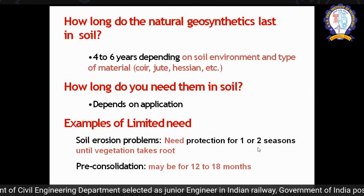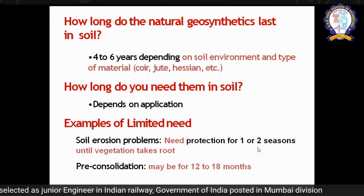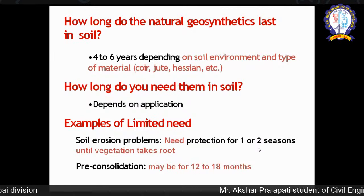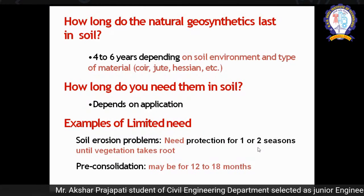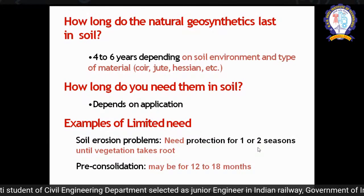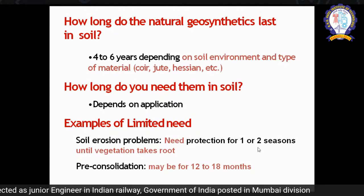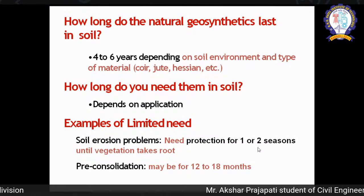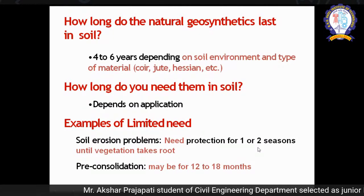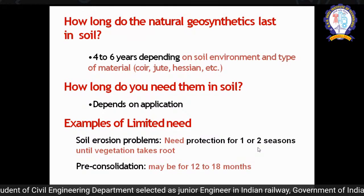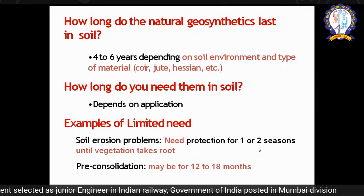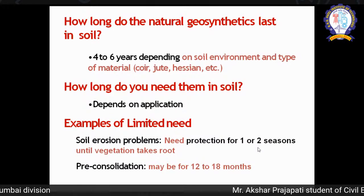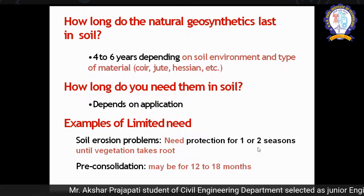We must know how to use natural fiber materials, because since they are made from natural materials, they have a possibility of decomposing or degrading over time. Based on application, they can last 4 to 6 years, whereas synthetic geosynthetics last 50 to 100 years. So based on your application, you need to understand the site condition and how long you need the material in the soil. For example, if you have a soil erosion problem and use natural geosynthetics for at least one and a half years, by that time vegetation will grow on the surface and the erosion problem will resolve naturally. By using natural geosynthetics you reinforce the slope, and slowly the vegetation takes over.